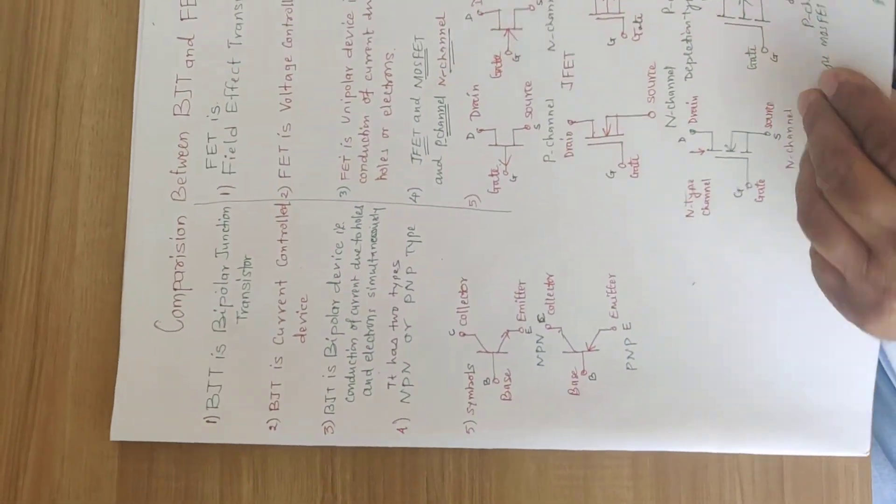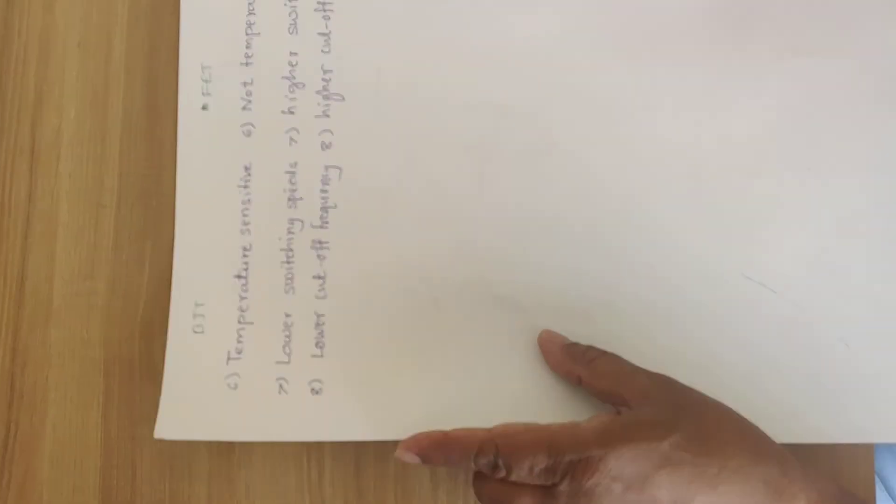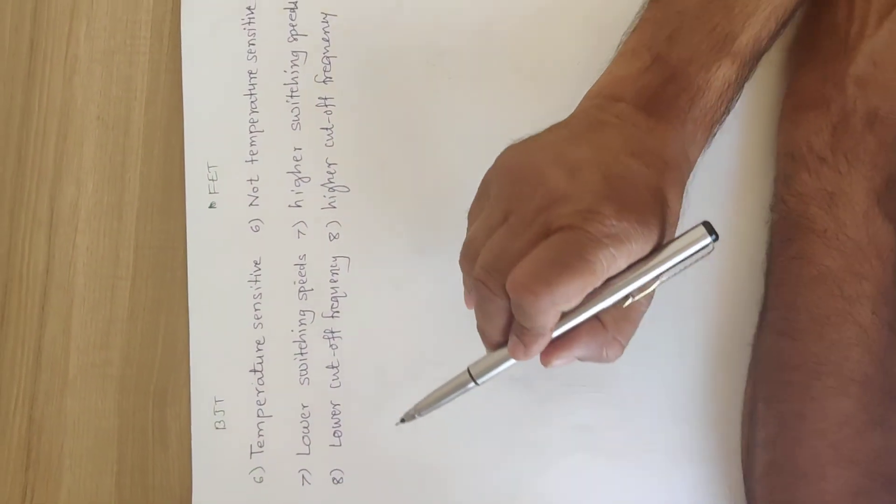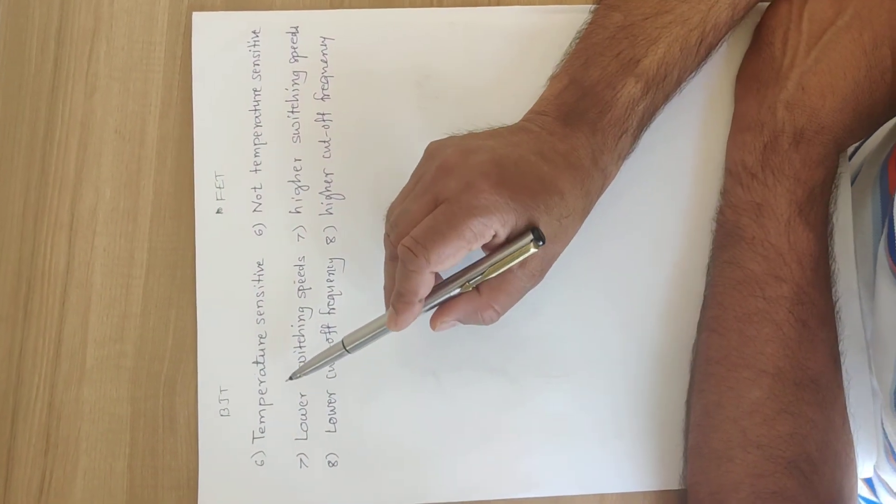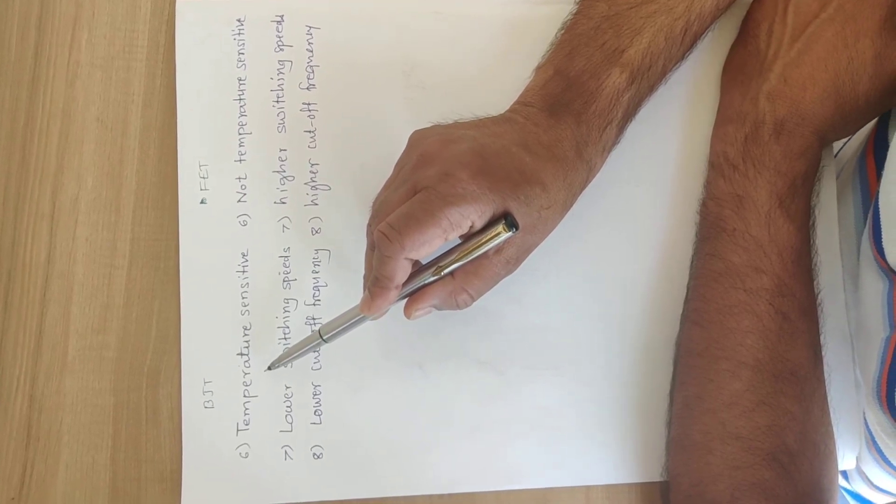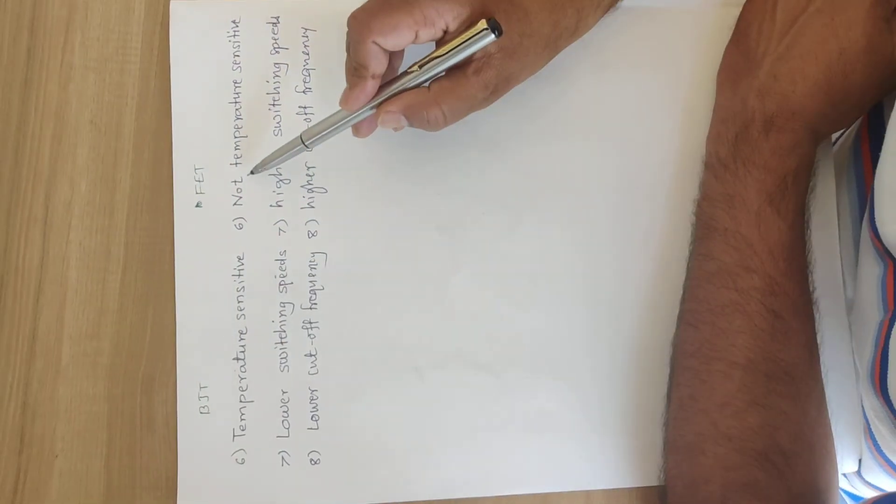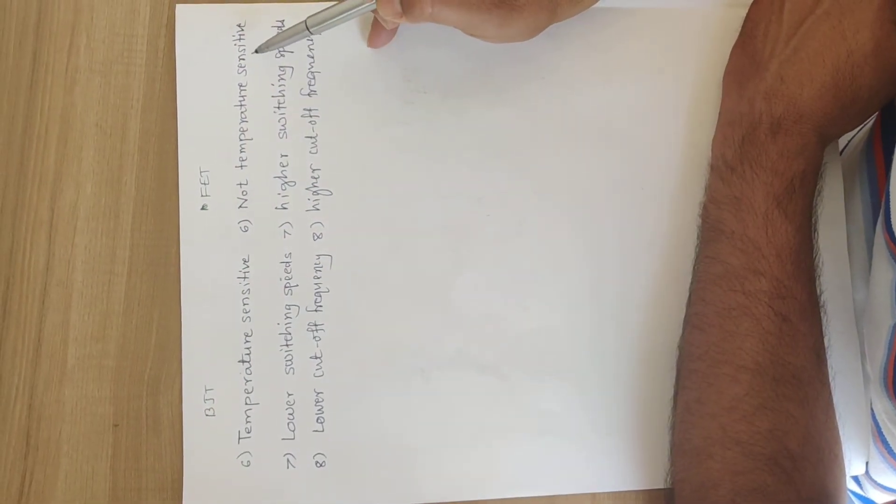These are the five different differences. And now the sixth one. We know that BJT depends on the current, collector current depends on the temperature. So it is a temperature sensitive device. But FET is not temperature sensitive device.